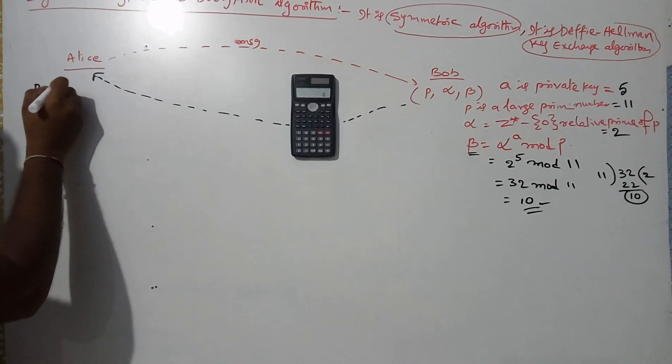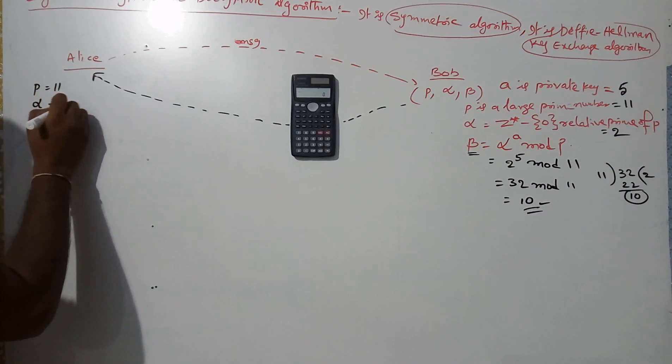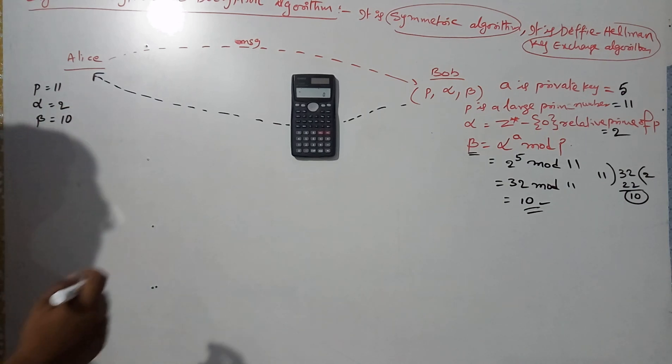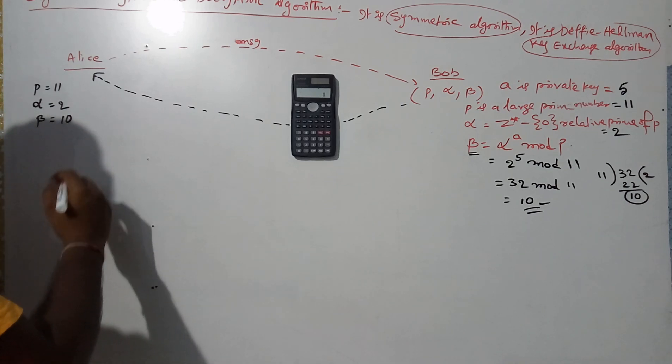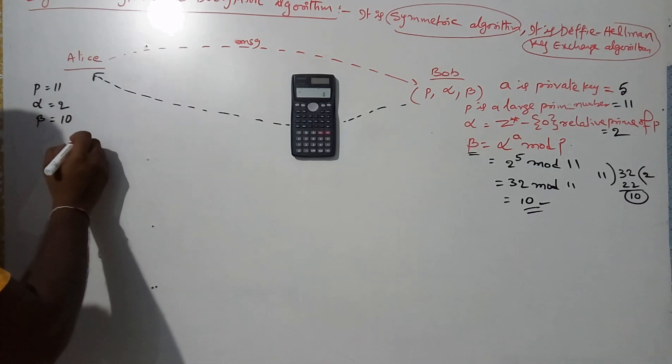Sending these values to Alice: p equals 11, alpha equals 2, beta equals 10. Next Alice is sending the ciphertext to Bob.